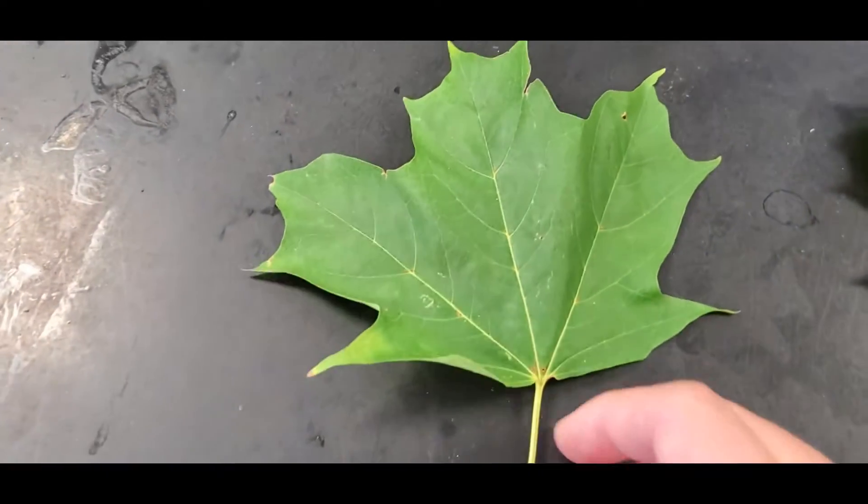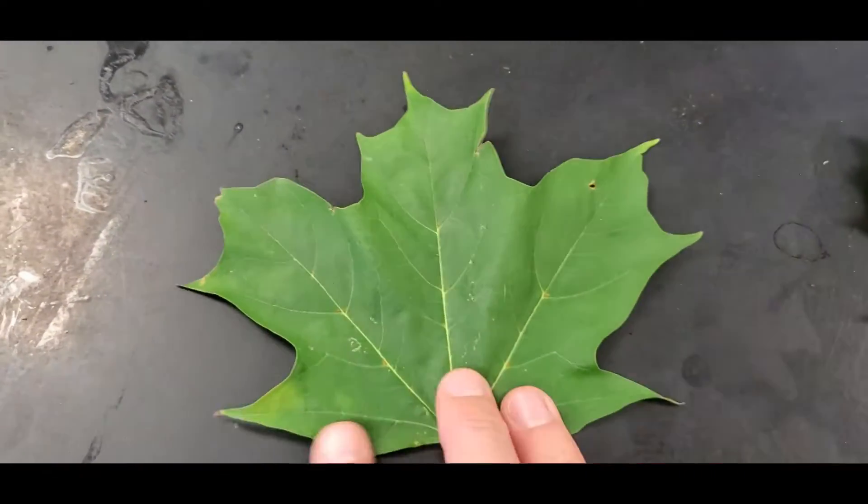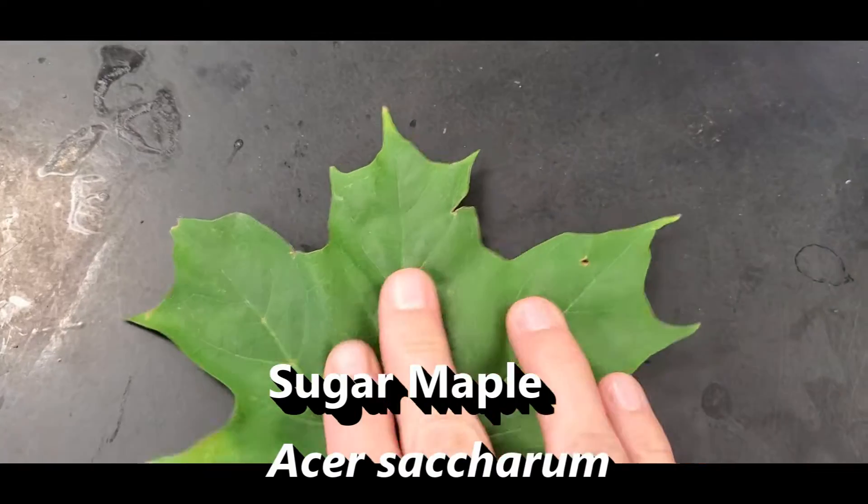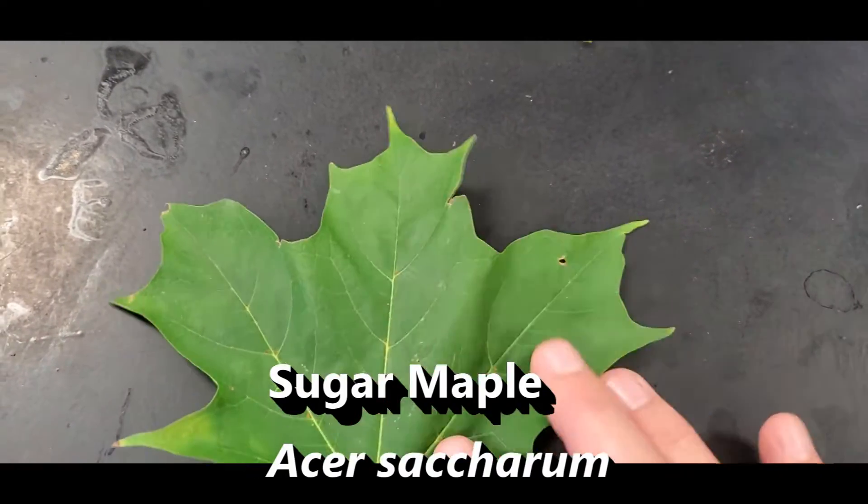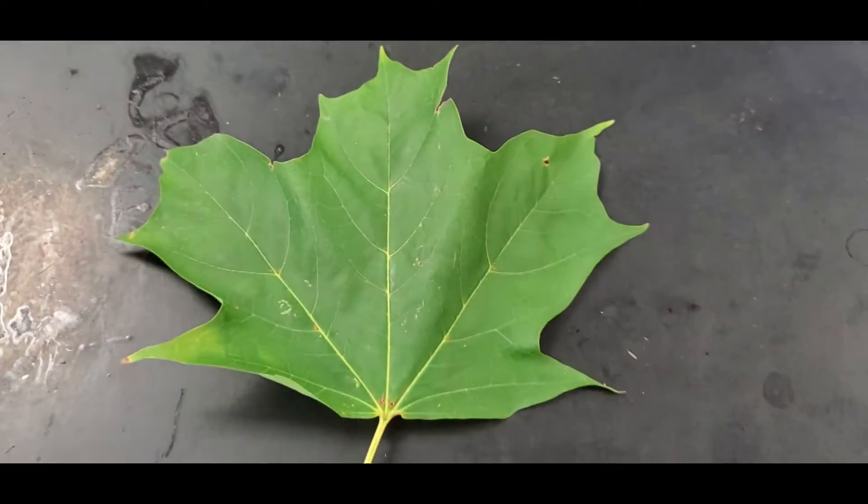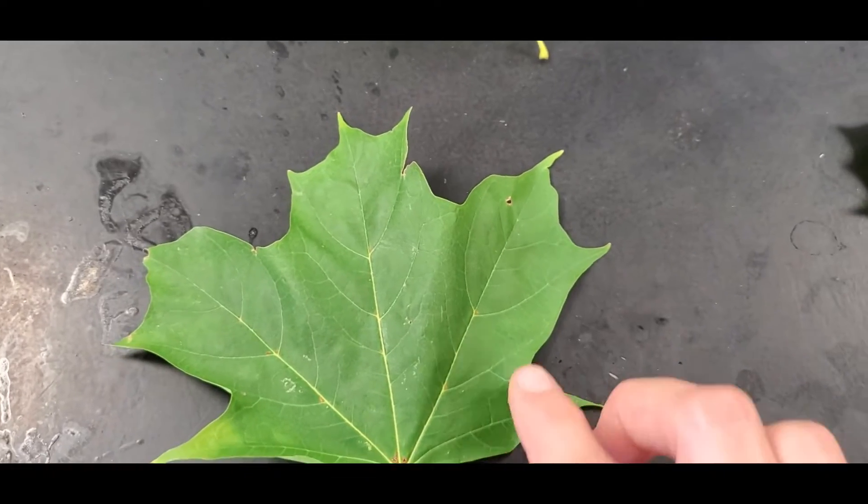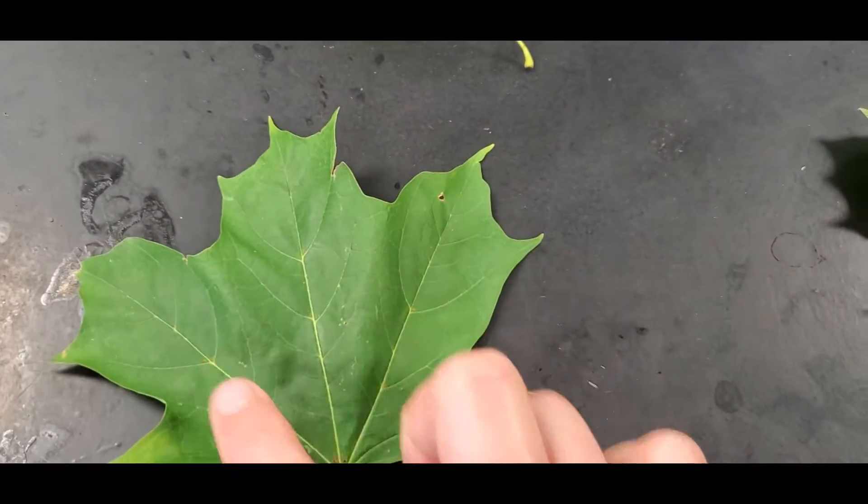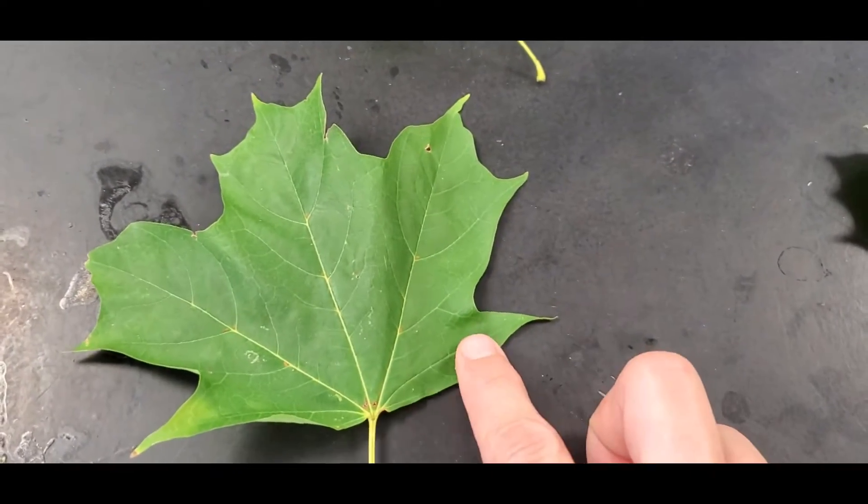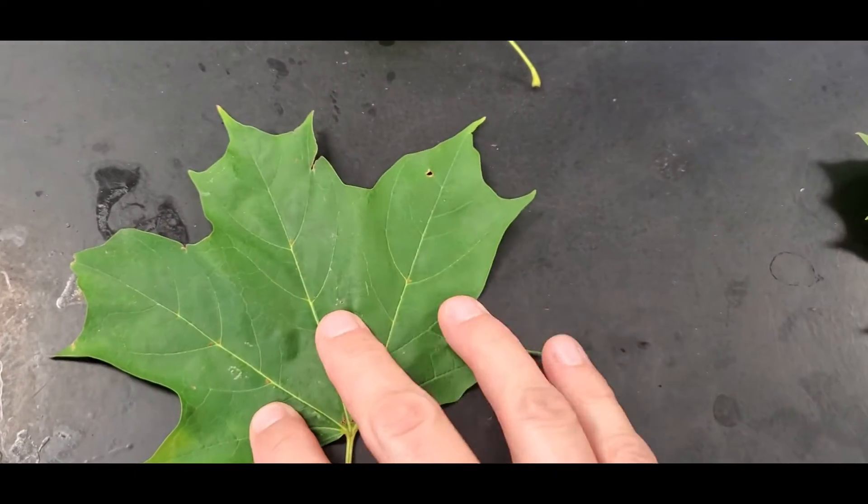Okay, so let's start here. This is sugar maple, Acer saccharum. You can recognize it because typically it has one, two, three points there, and then it will have these two points at the base.